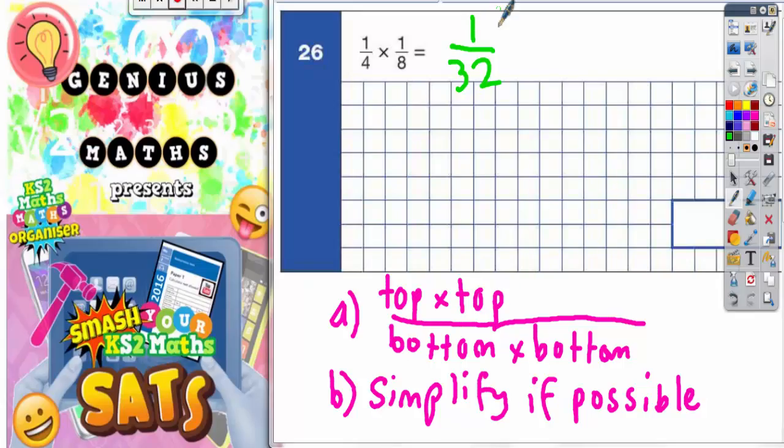Simplify if possible. Well we can't simplify this one because the only number that will divide into 1 and 32 is 1 itself. And if you divide by 1 itself, 1 divided by 1 is 1 and 32 divided by 1 is still 32. So your final answer is 1 over 32.